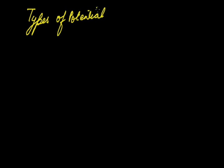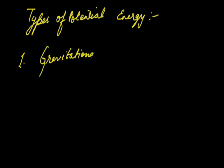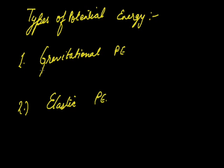We are going to discuss the types of potential energy. The first is gravitational potential energy and the second is elastic potential energy. Gravitational potential energy is acquired by an object due to its position or configuration against the gravitational force. Elastic potential energy is due to the elastic property of a spring or any material.